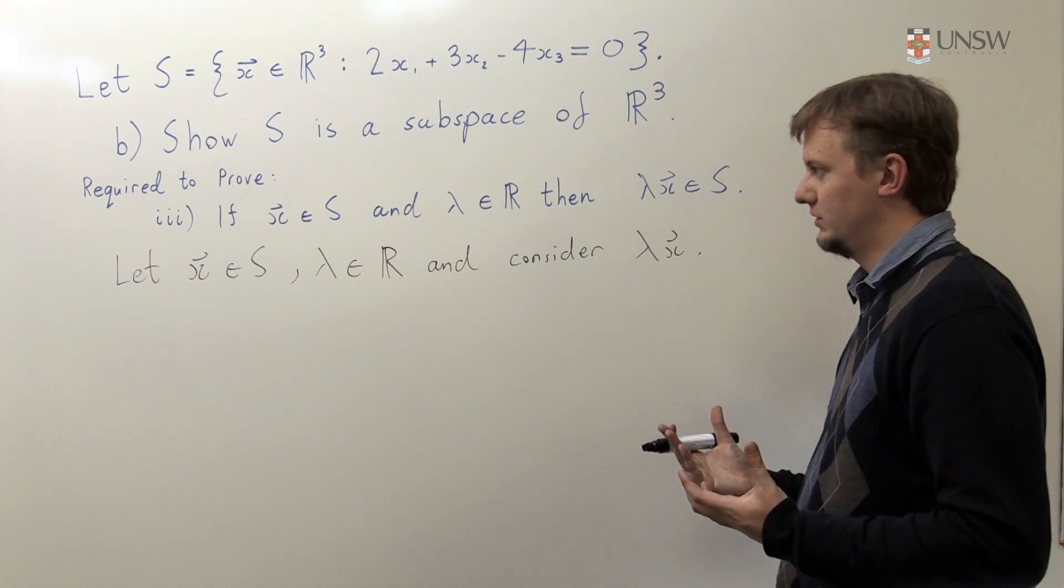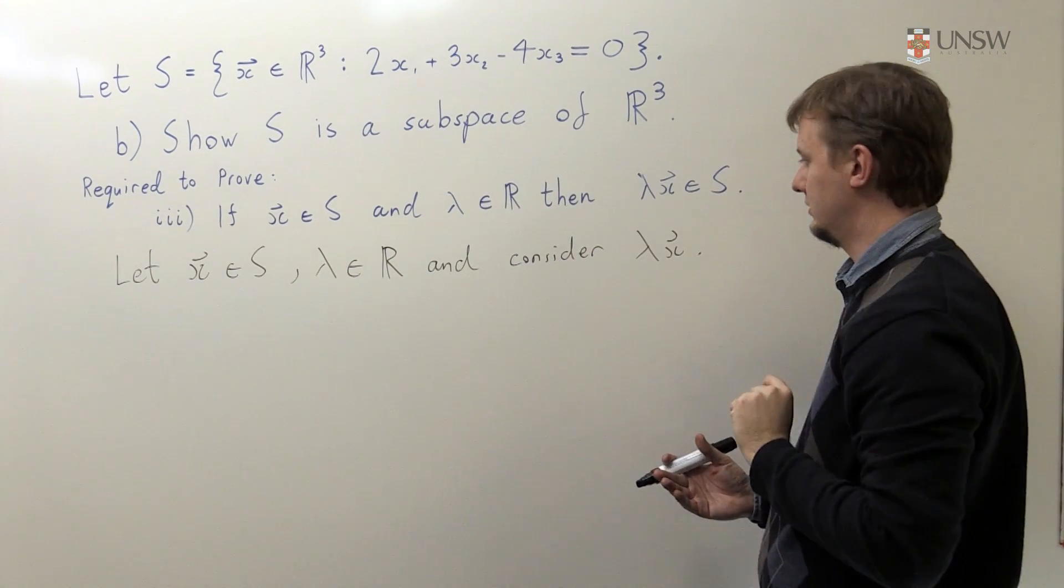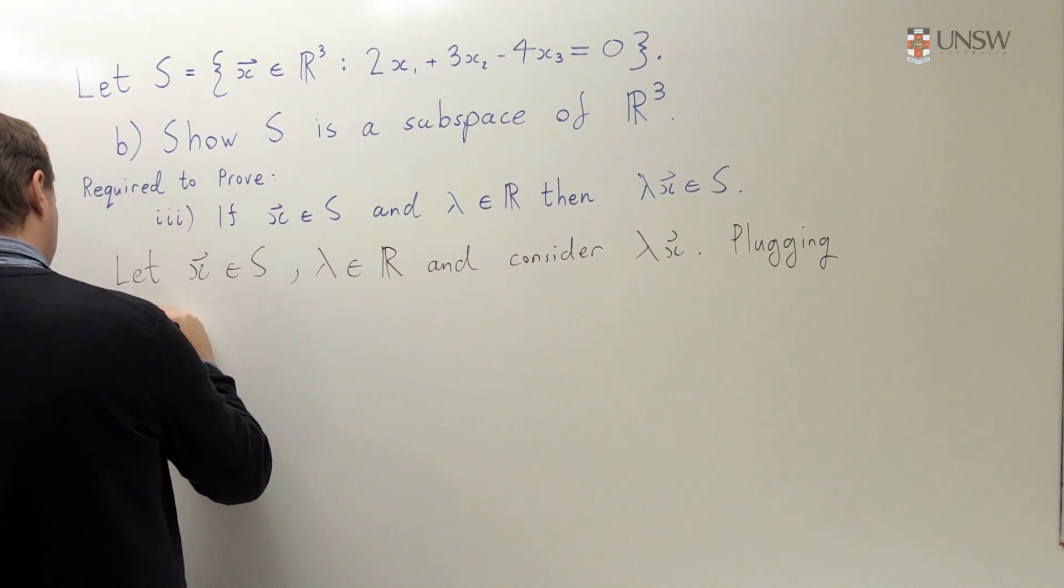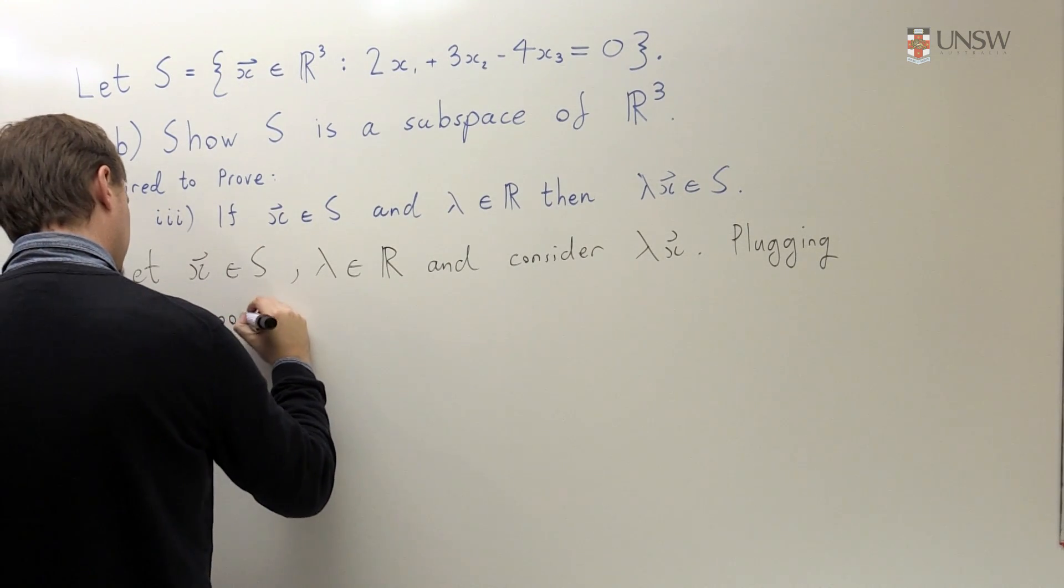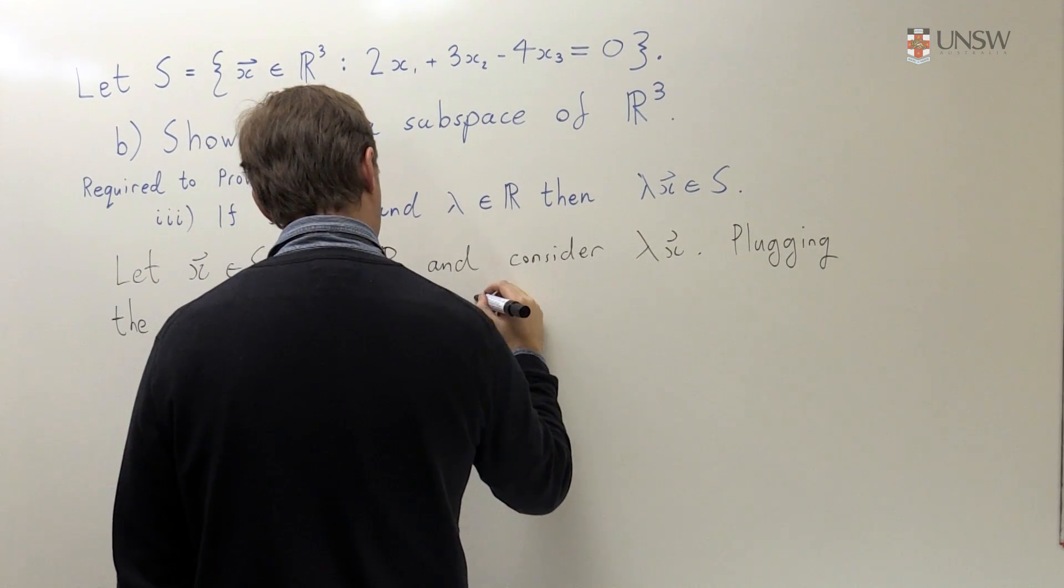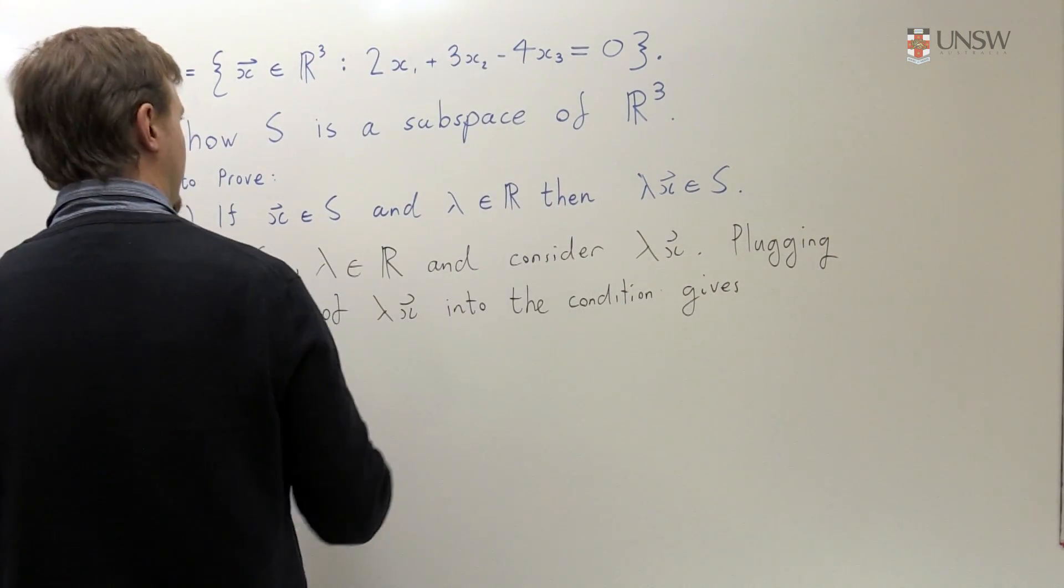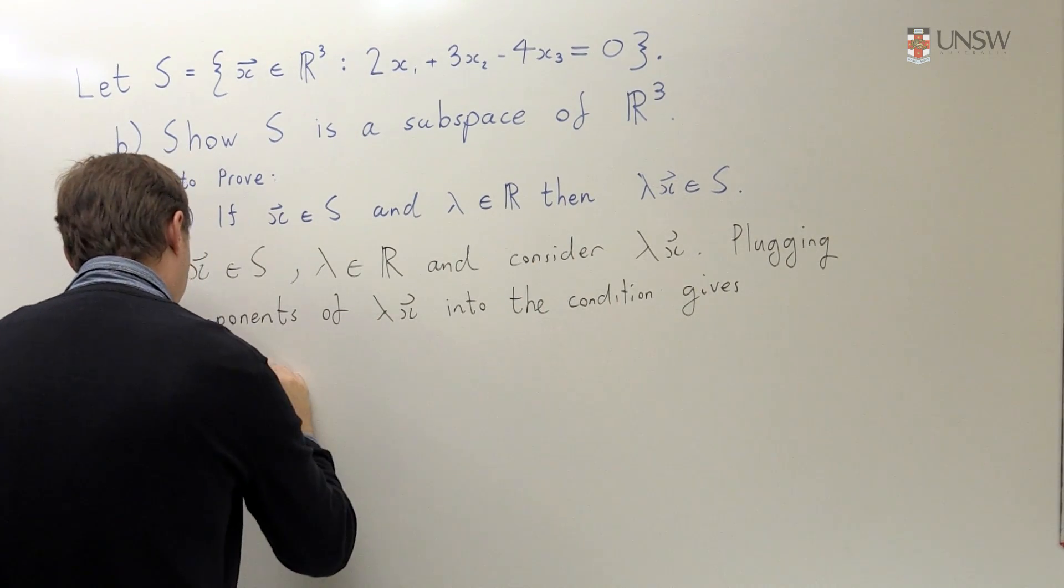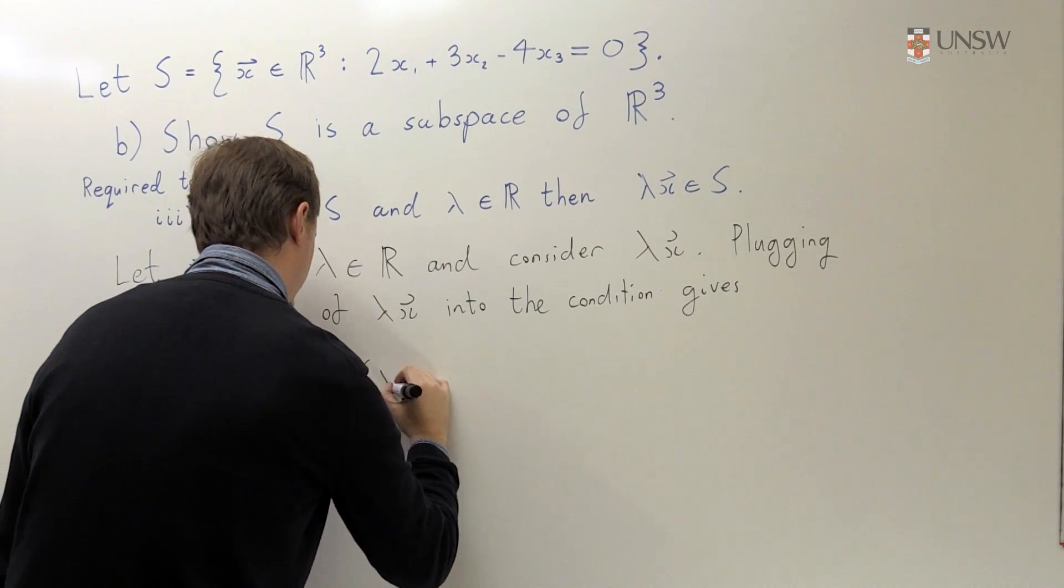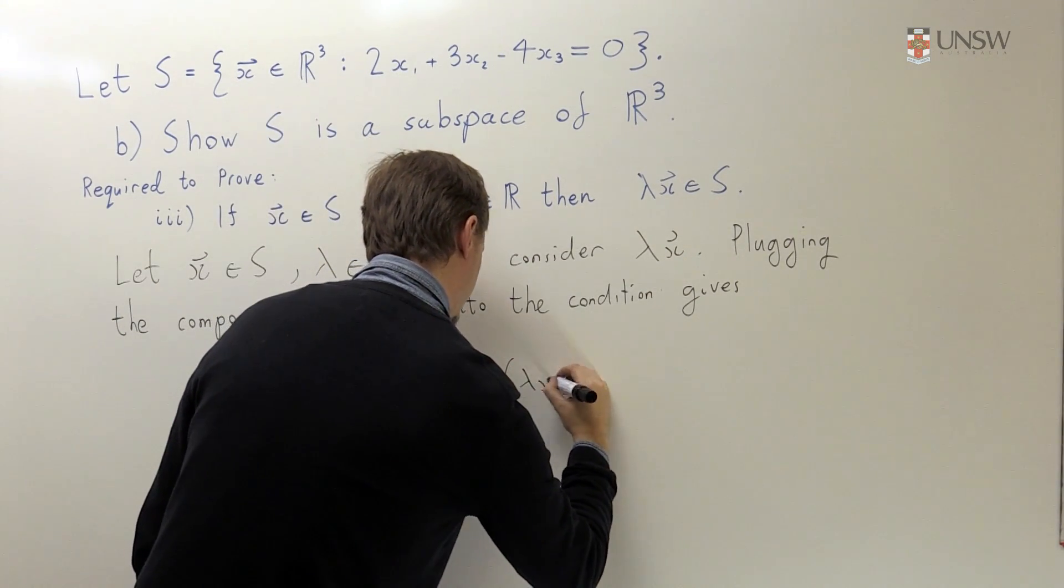So again, I want to show this is in S. So the only way to really do that is to show that this vector satisfies this condition. So let's take the components and plug the components of lambda X into the condition. This gives 2 times the first component of lambda X, which is 2 times lambda X1, plus 3 times lambda X2 minus 4 times lambda X3.